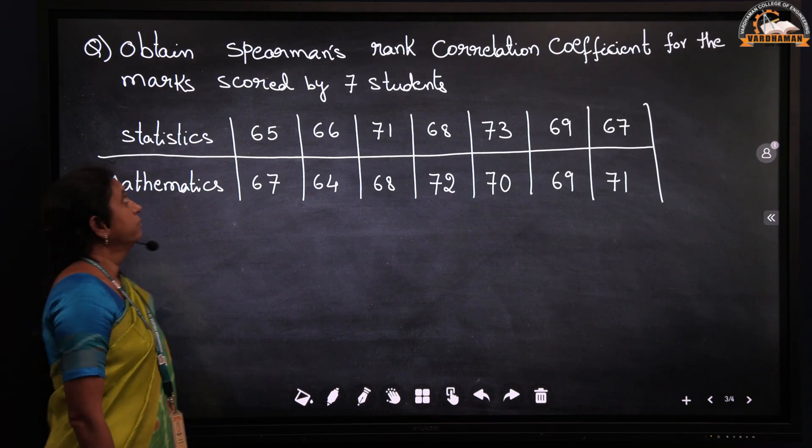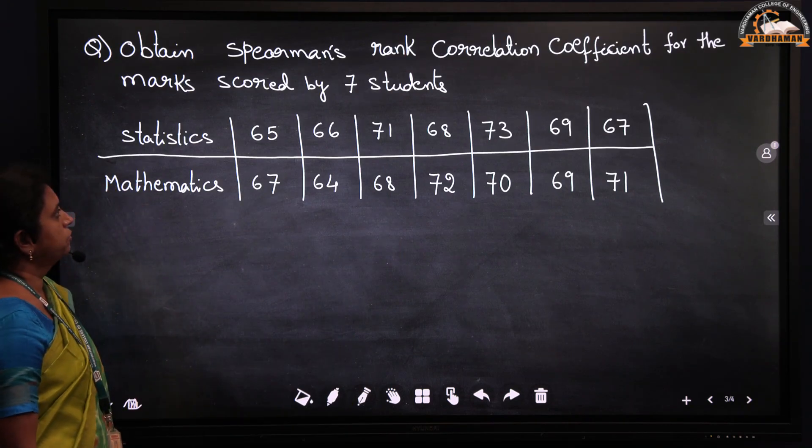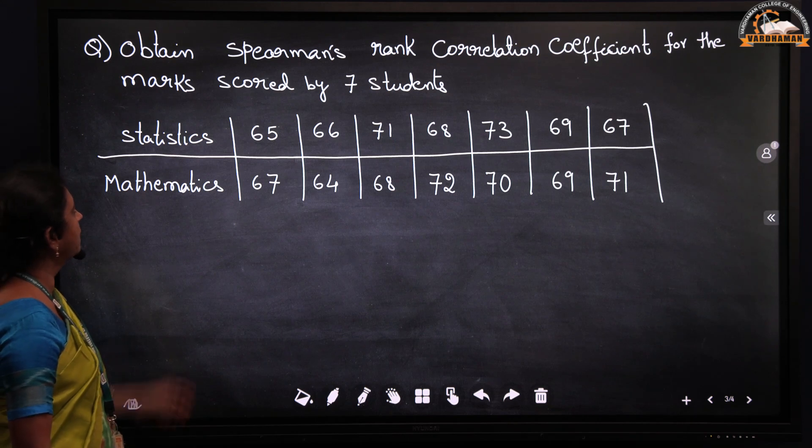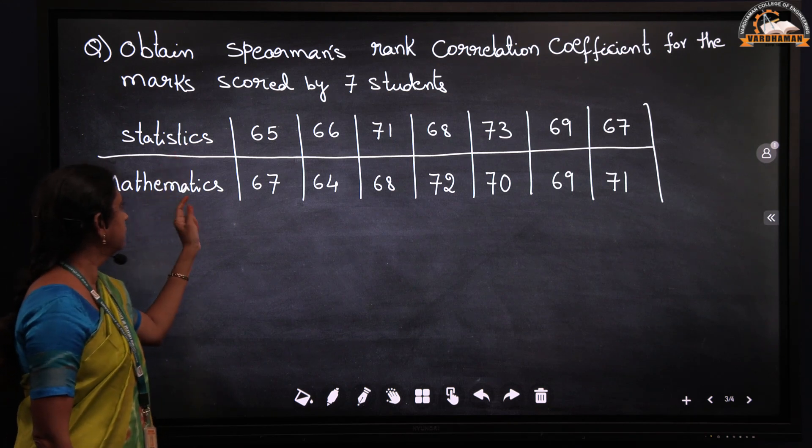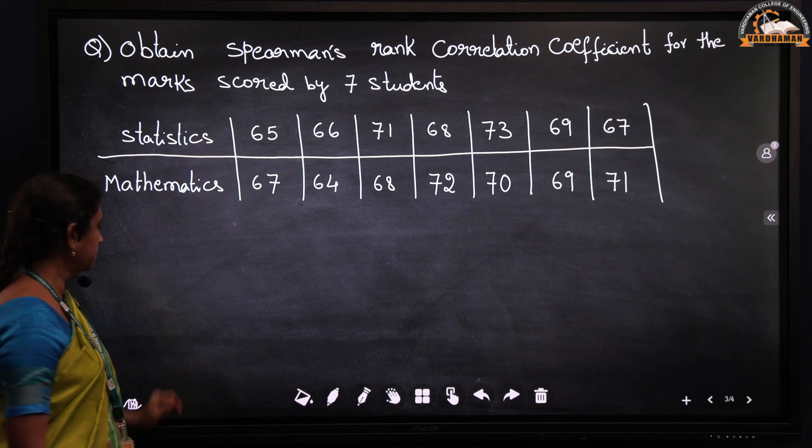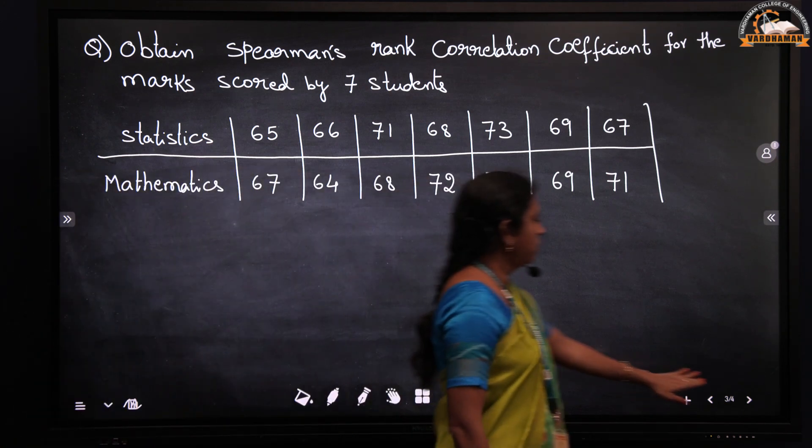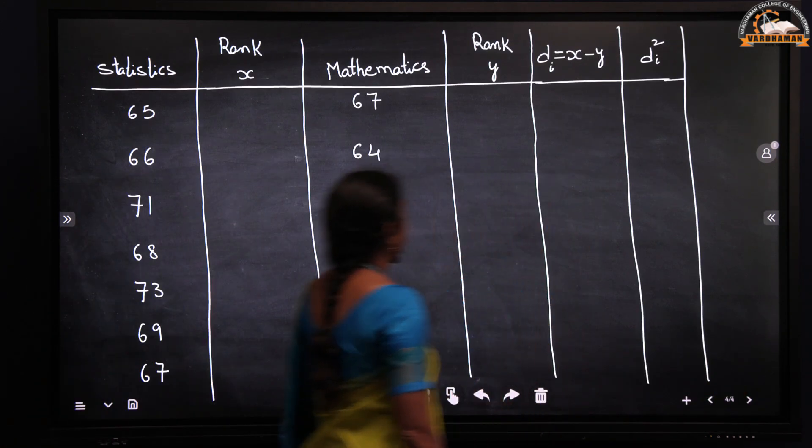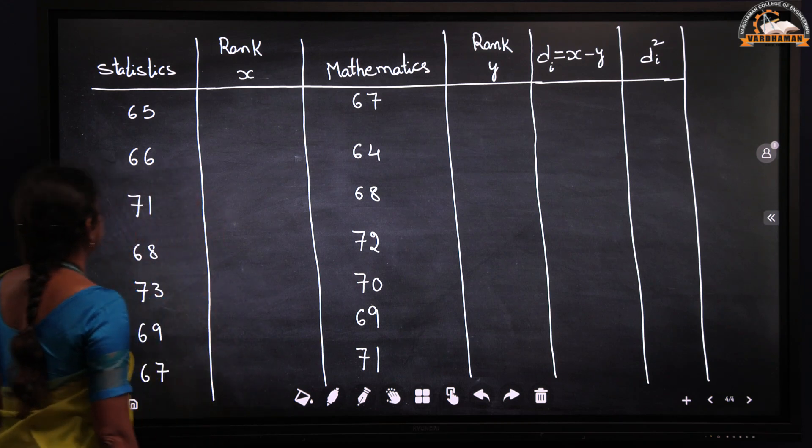Now we will see an example. We have to obtain Spearman's rank correlation coefficient for the marks scored by 7 students, and the marks are given in statistics and mathematics. So here we will first allot ranks to these marks and then find out the correlation coefficient.